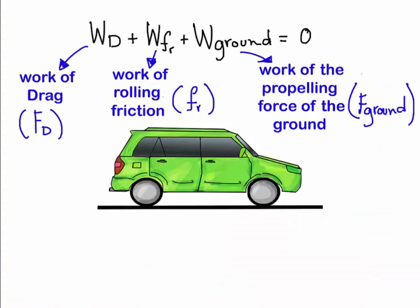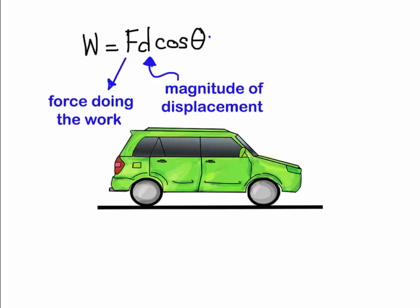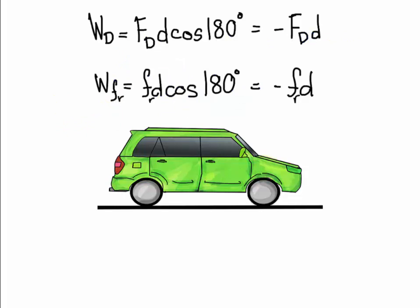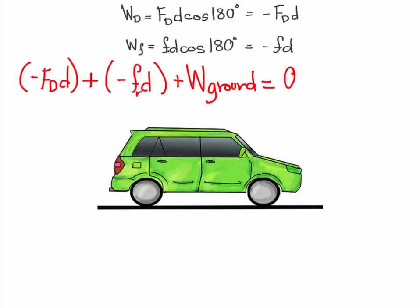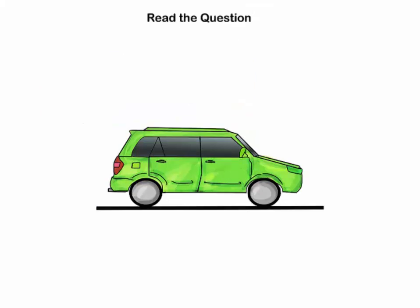Going back to the question, we have the work of drag plus the work of the rolling friction plus the work of the propelling force of the ground equaling zero. Recall the definition of work, which is W equals F, the force, D, the magnitude of displacement, and cosine theta, the angle between them. After we solve for the work of the drag and the friction force, we get negative drag work and negative friction work. We can plug that back into our non-conservative force work equation. When we solve for W ground, this is our final equation.